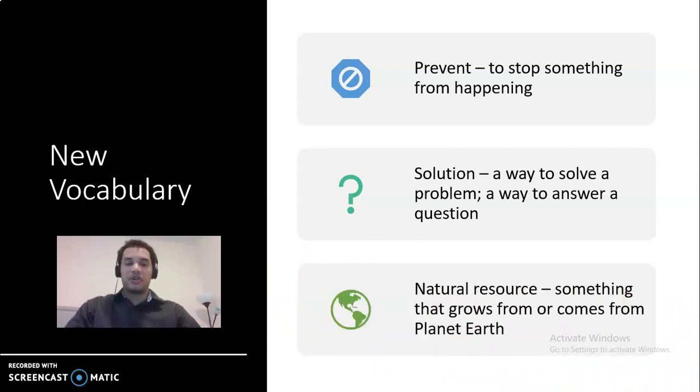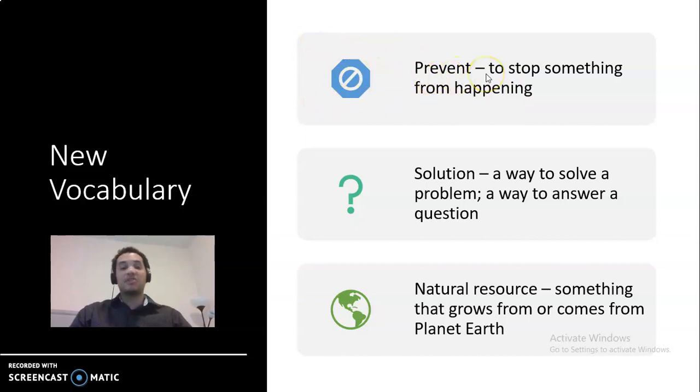Okay. So we have some new vocabulary words. Let me move this here so you can have a better look. So this word is called Prevent. Everyone say Prevent. Prevent. So Prevent means to stop something from happening. So you see the stop sign? So Prevent just means to stop. So number two is Solution. Everyone say Solution. Okay. So Solution, see the question mark here? So Solution basically answers your questions or it's a way to solve a problem, a way to answer a question. So next we have natural resource. Remember natural is basically made from the earth and resource are practically materials or things. So basically things that are made from the earth are called natural resources. That's why you have the planet here, planet earth. But let's read further. So natural resource, something that grows from or comes from planet earth. Very simple.